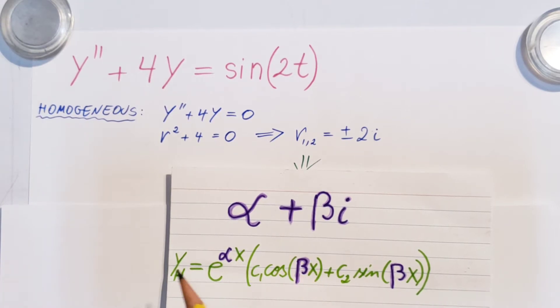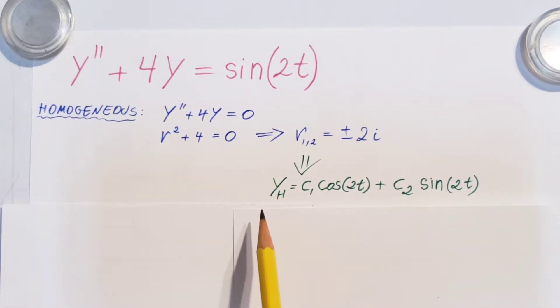All we have to do is plug in our real part and our imaginary part according to the setup and we are able to find the homogeneous solution for our ODE which is c1 cosine 2t plus c2 sine 2t.